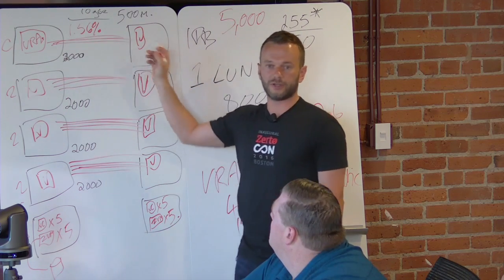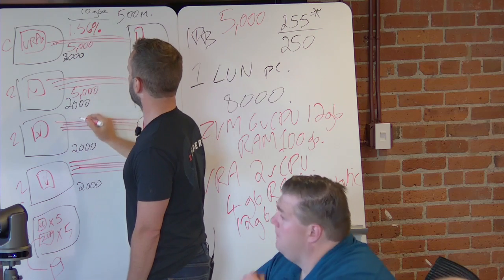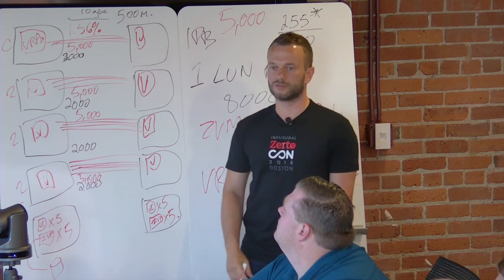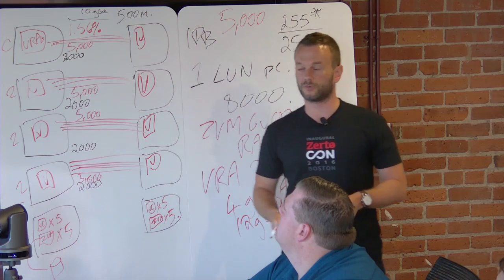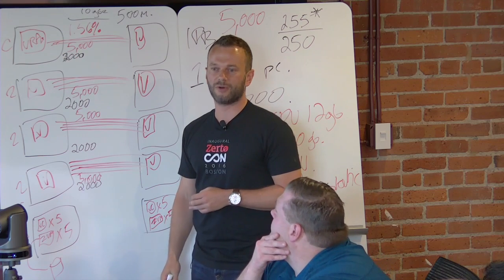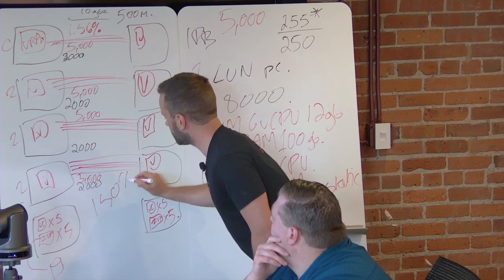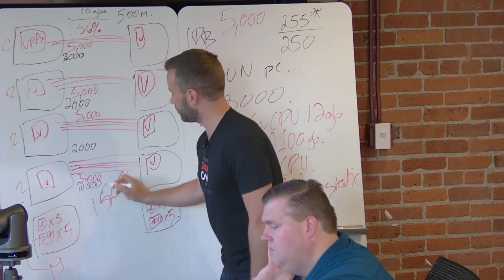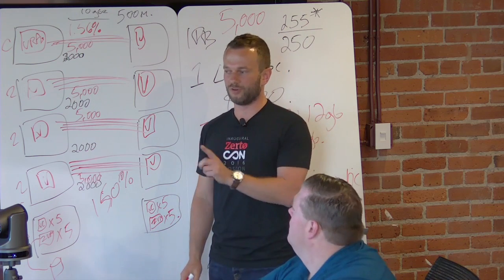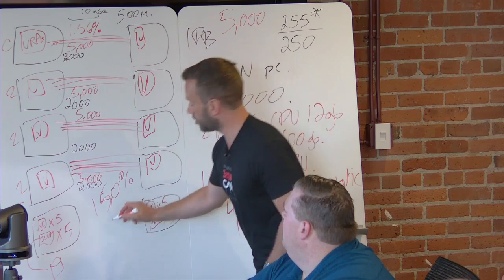The 5,000 VM figure is what Zerto tests to in their scale environment in Israel — 5,000 VMs between two Zerto managers and two vCenters. When you put Zerto on top of this architecture, the maximum per cluster becomes 625, and instead of an 8,000 VM maximum environment it becomes a 20,000 VM maximum environment — theoretically a 150% increase in maximum customers. However, not all customers have just one VM; around 20% sometimes have two VMs.